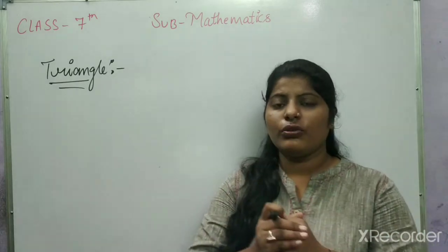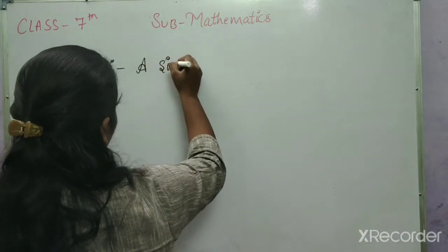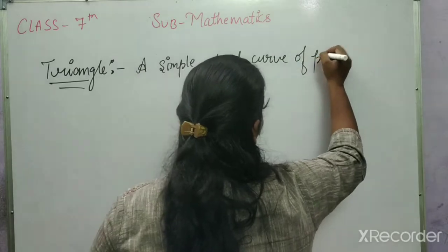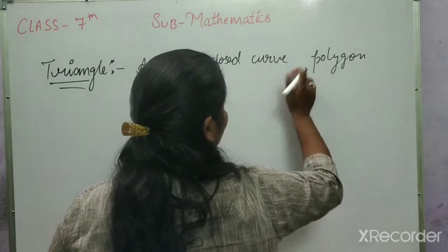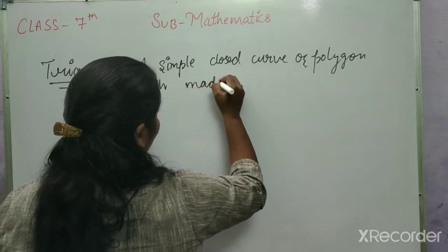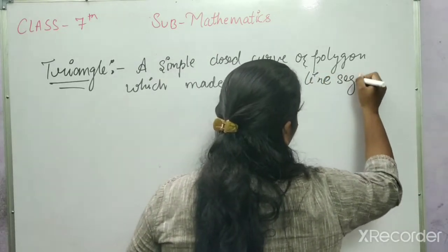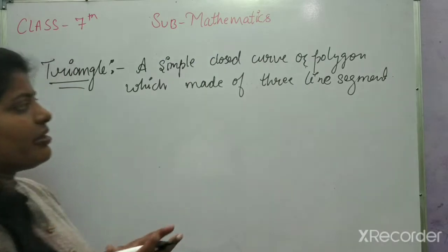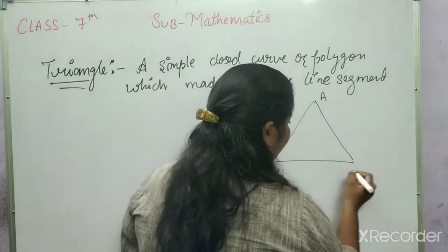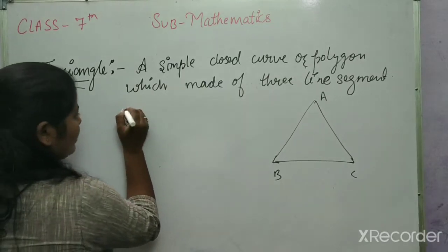A simple closed curve, which is made up of three line segments. The three line segments form a closed curve. A triangle is made up of three sides, three vertices, three angles.